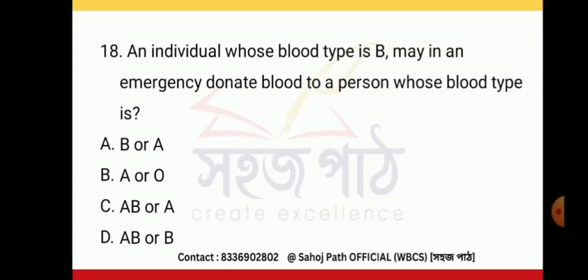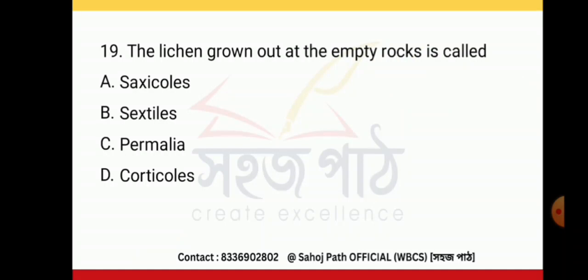An individual whose blood type is B may in an emergency donate blood to a person whose blood type is AB, B, or B. The lichen grown on empty rocks is called saxicolous.